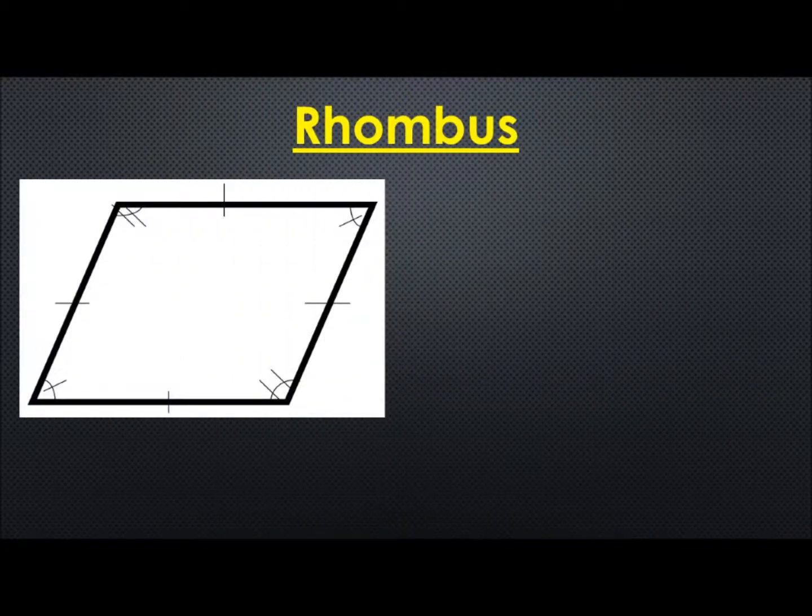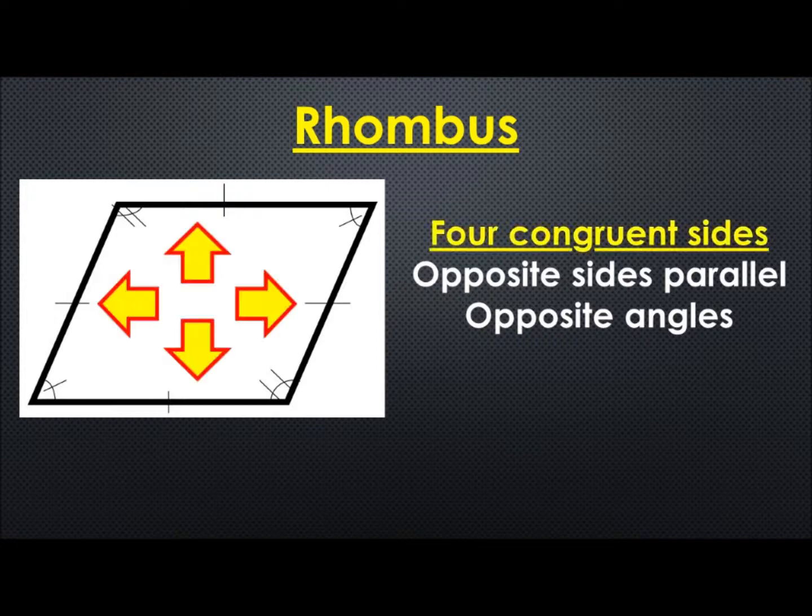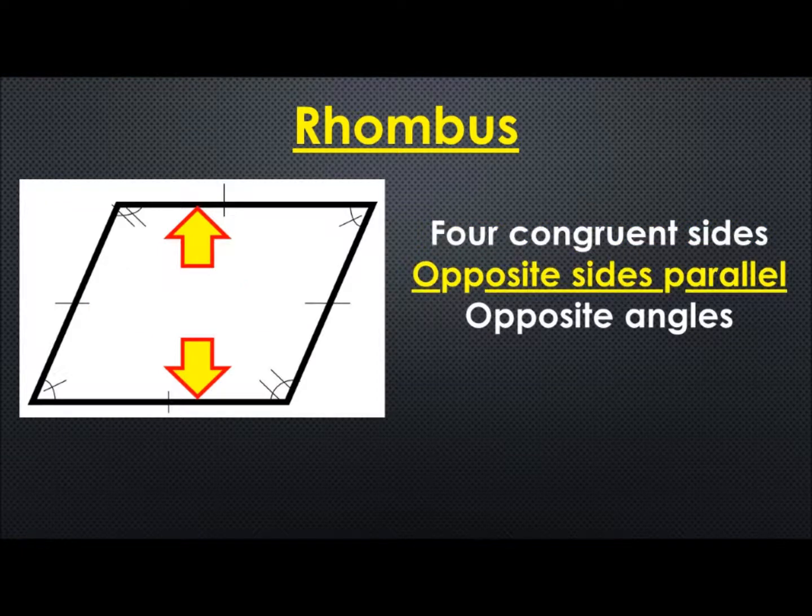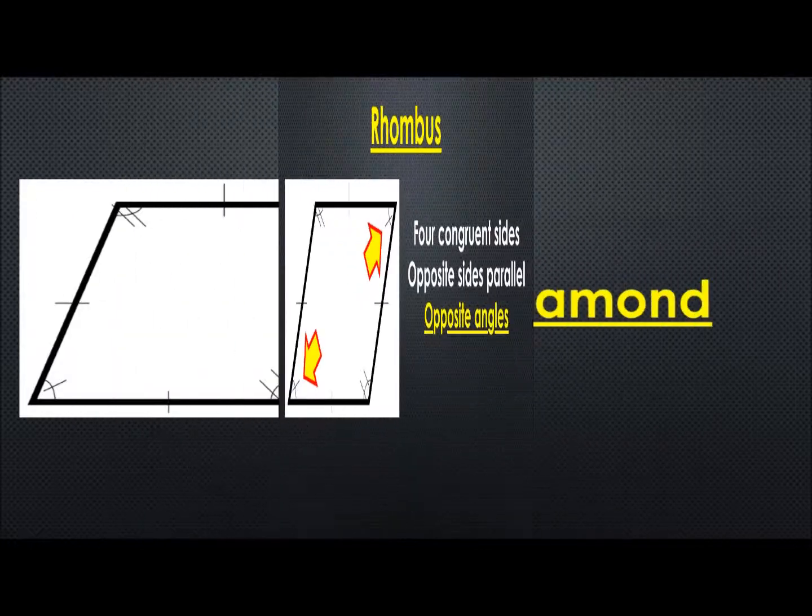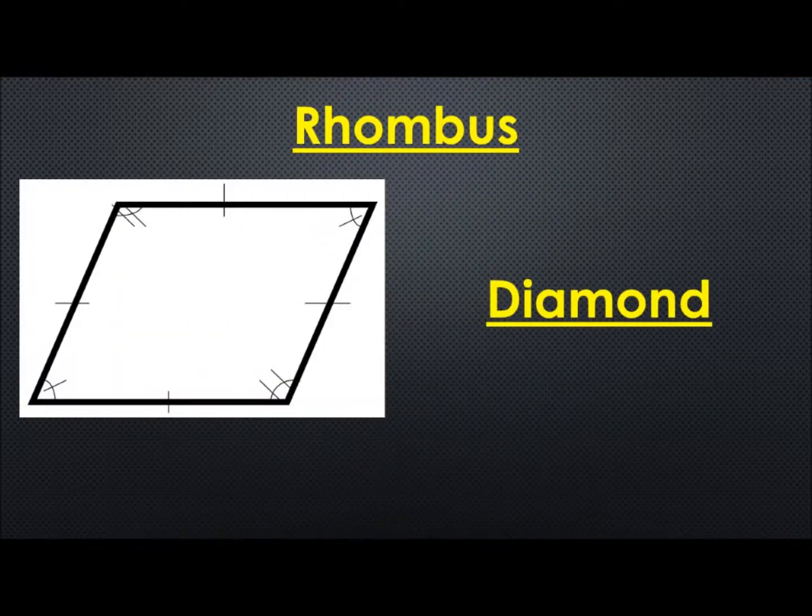Here we have a rhombus. A rhombus has four congruent sides. Congruent means the same or similar. They have opposite sides which are parallel and opposite angles are congruent. Now some configurations of a rhombus can also be called a diamond.